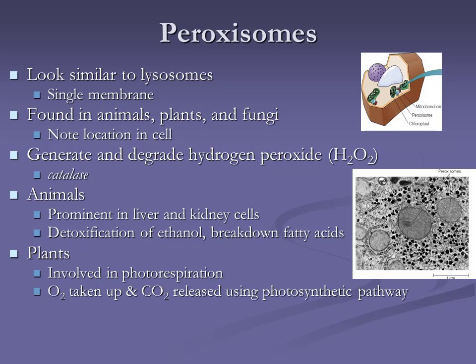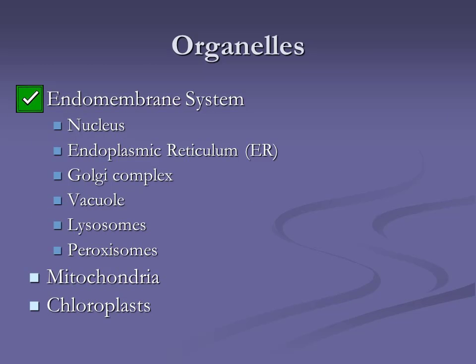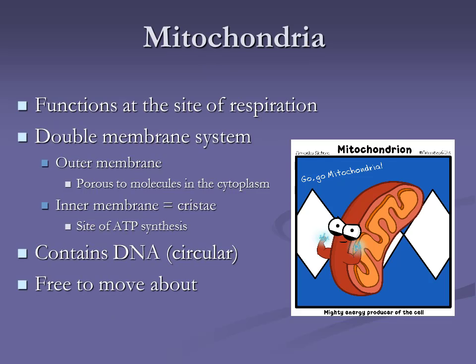That's a lot in the endomembrane system category: nucleus, ER, Golgi, and vesicular portions — lysosomes, peroxisomes, vacuoles — all grouped together. Another separate membrane-bound organelle is the mitochondria, the powerhouse of the cell.